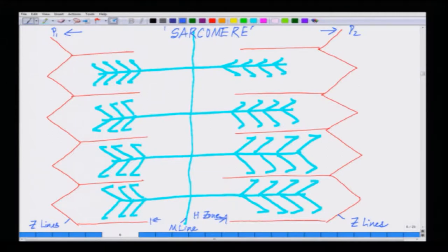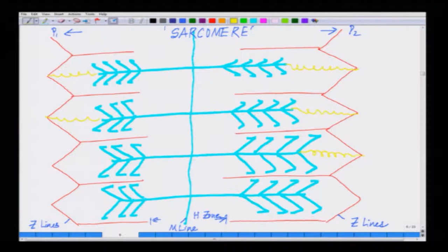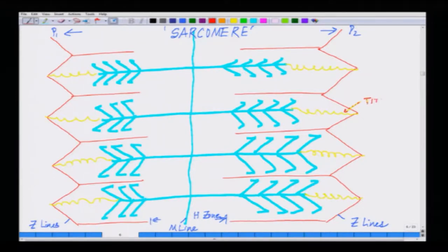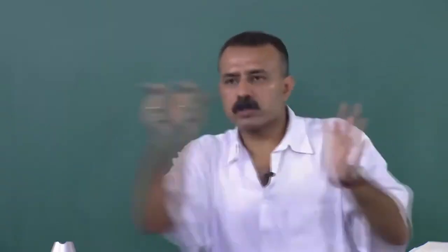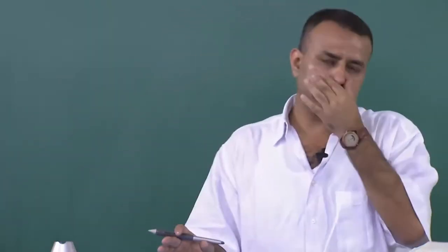There is one more structure to introduce — certain connecting structures which are like springs. These are a coiling kind of protein — like a spring which pulls something. This is the basic architecture of a cross section of a muscle.